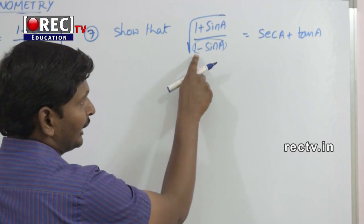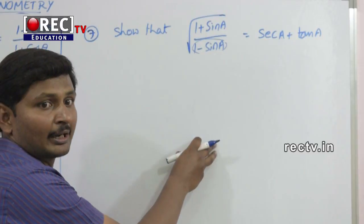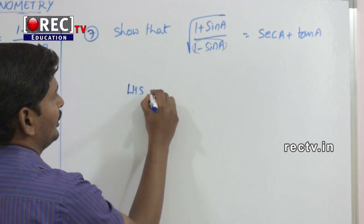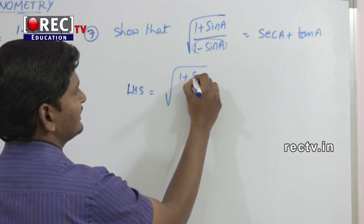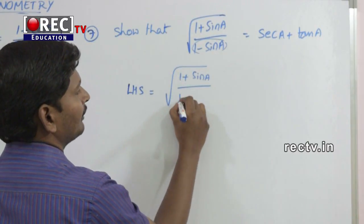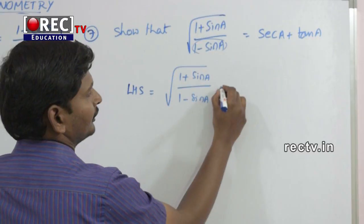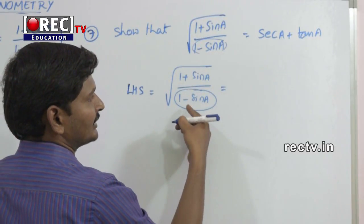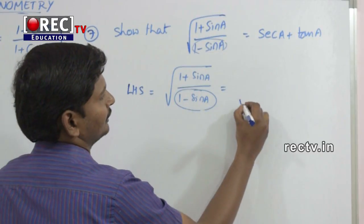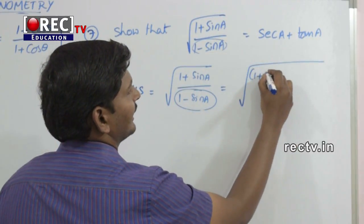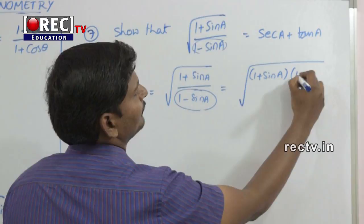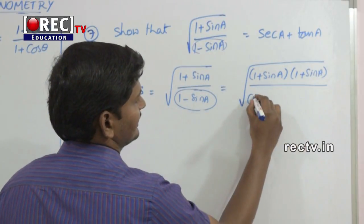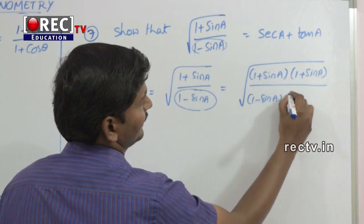To eliminate this 1 minus sin a, you always have to multiply with 1 plus sin a. So, LHS is equal to square root of 1 plus sin a divided by 1 minus sin a. To eliminate this, we multiply with 1 plus sin a — that means 1 plus sin a into 1 plus sin a divided by 1 minus sin a into 1 plus sin a.